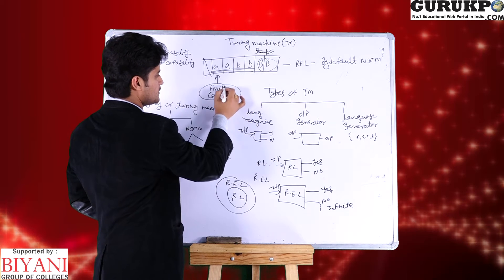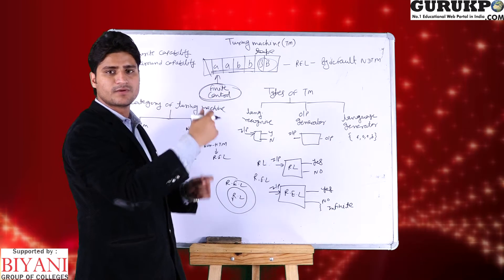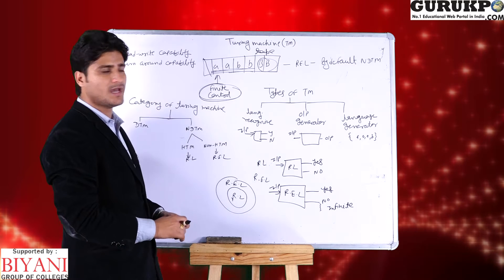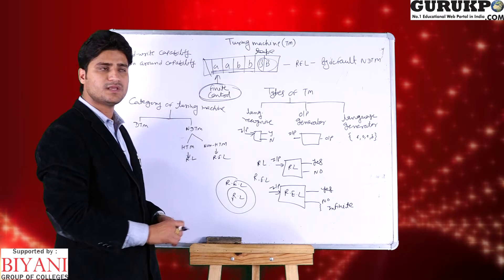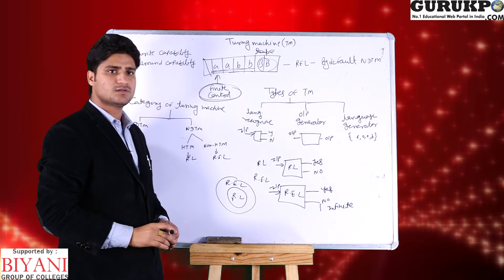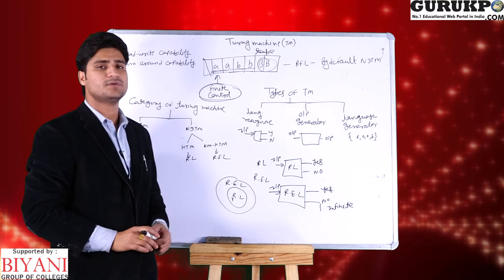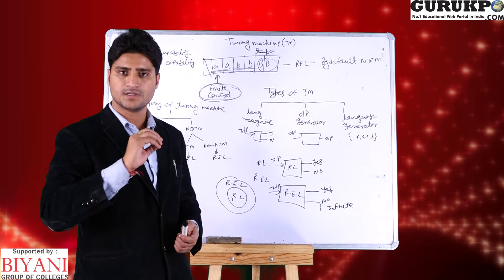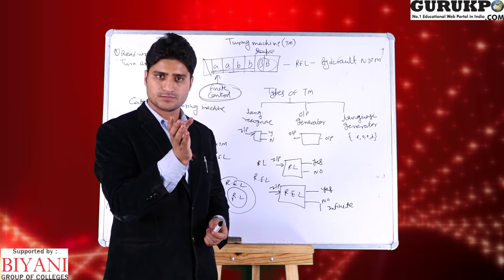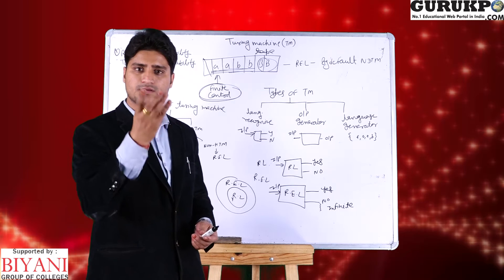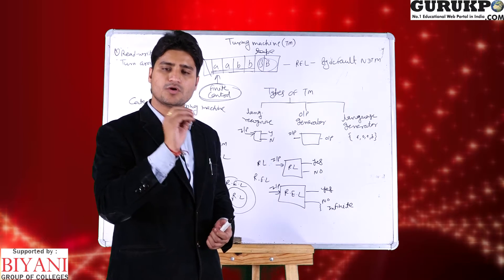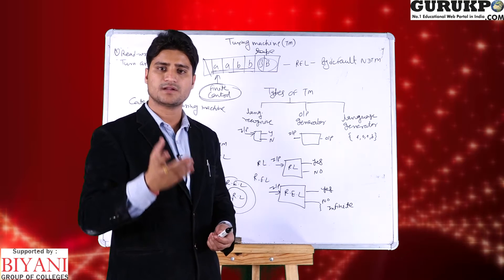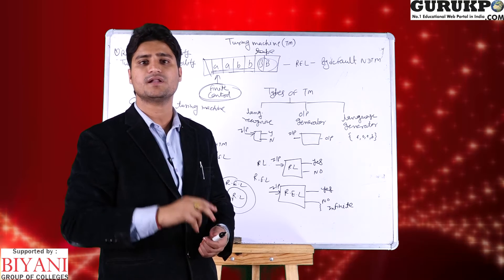This is the tape; this is the finite control which reads one by one. The basic functionality of the Turing machine is: we have read-write capability, and second is turn-around capability — we can move in both directions. In Turing machine, we can move in both directions, left or right. But in other automata like finite automata or pushdown automata, we can move only in the forward direction, but in Turing machines we can move both left and forward.